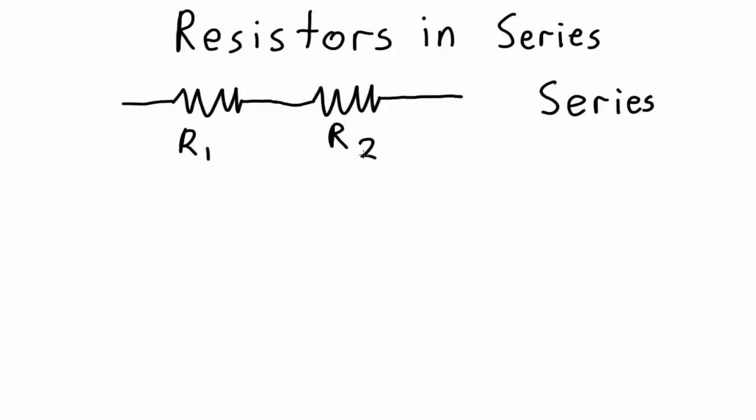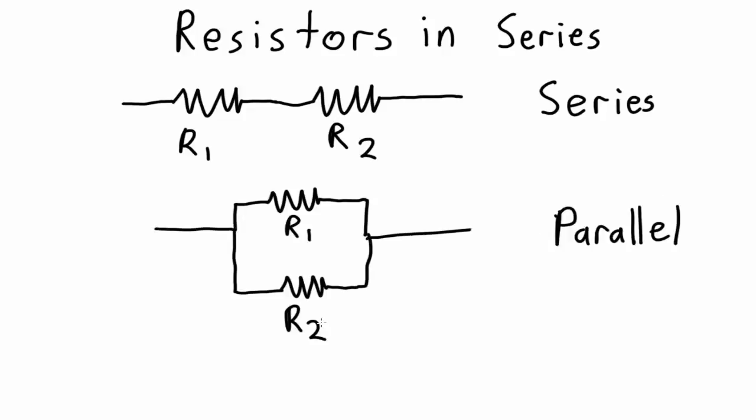The second way that I could arrange two resistors is in parallel. It so happens there's a trick you can use to find the total resistance whenever you have two resistors that are in series or two resistors that are in parallel. So I'm going to start off by showing you two resistors in series.